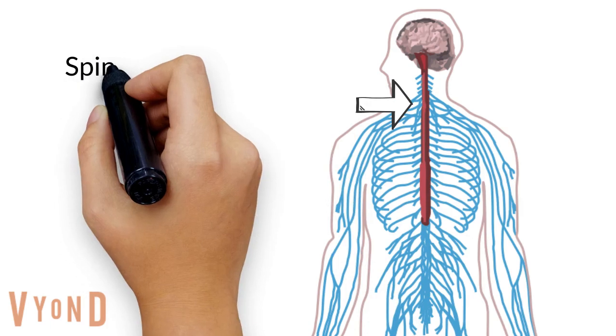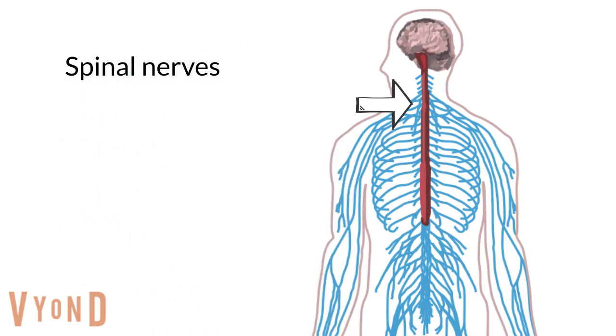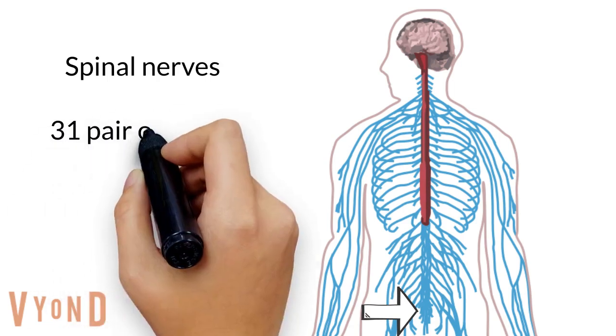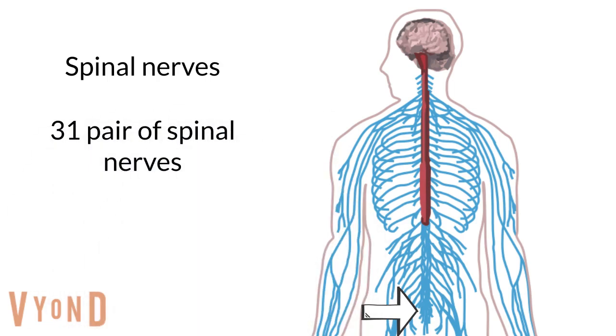The spinal cord contains some bulges or enlargements in the cervical and lumbar areas. There are 31 pairs of spinal nerves that emerge from the spinal cord.